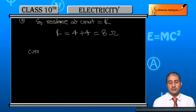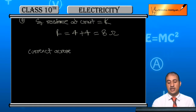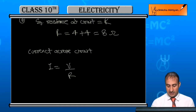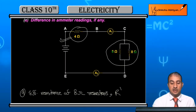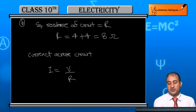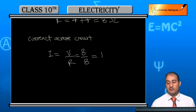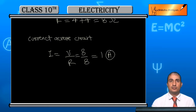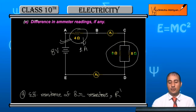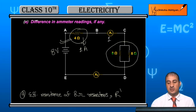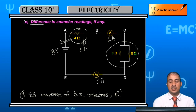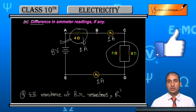The equivalent resistance is 8 ohm. Now we calculate the current. Since all elements are in series, the current across the circuit equals the current across the 4-ohm resistor. I = V/R. The power supply is 8 volts, and equivalent resistance is 8 ohm, so I = 8/8 = 1 ampere. This 1 ampere flows through the entire circuit — through A1 and also through A2, since both are in series. Therefore there is no difference in ammeter readings.